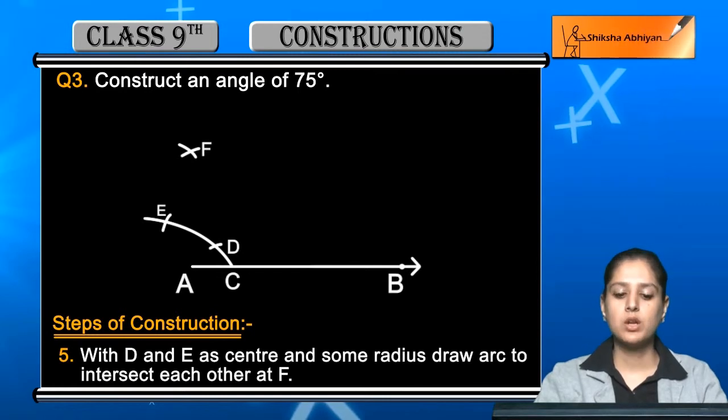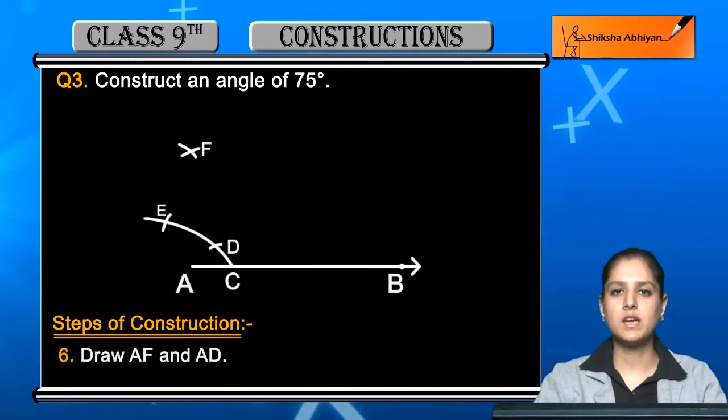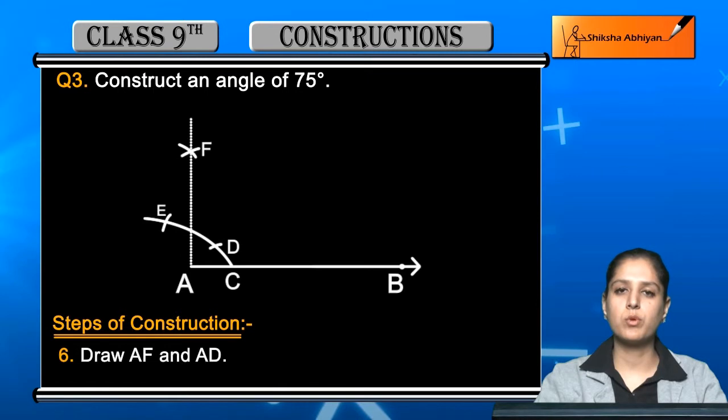Next step is, draw AF and AD. Using straight lines, scale, pencil, join point A to point F, and point A to point D also. This way you will have the figure.